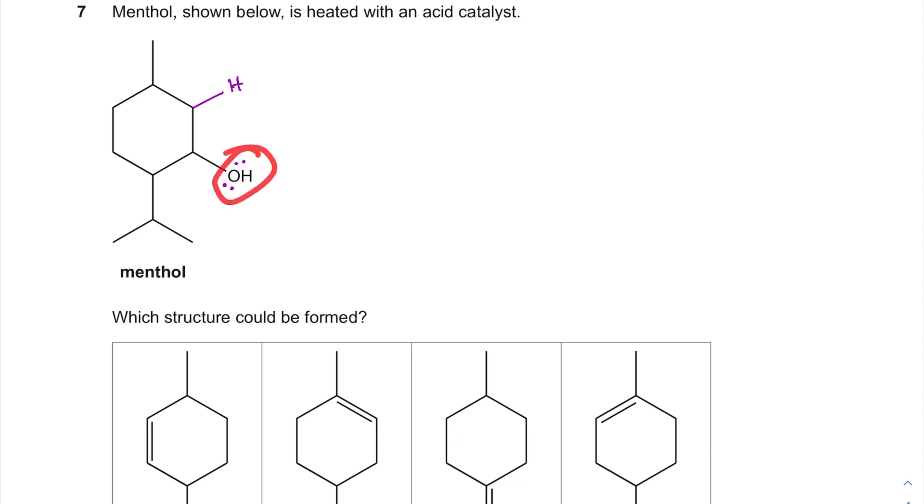This OH is going to be protonated by the acid. So this is the acid we're using. And this acid will dissociate. When it dissociates, it's going to form H plus, A minus.